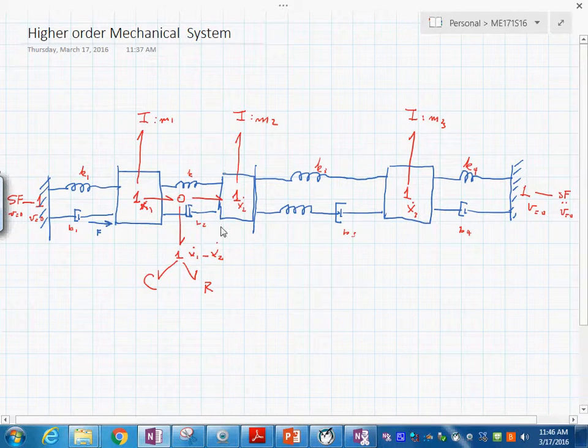In between these two, I think we have the same thing. Okay. And then you will have this would be x sub 1, x sub 2 dot, minus x sub 3 dot, like that. We have the C and the R the same way.